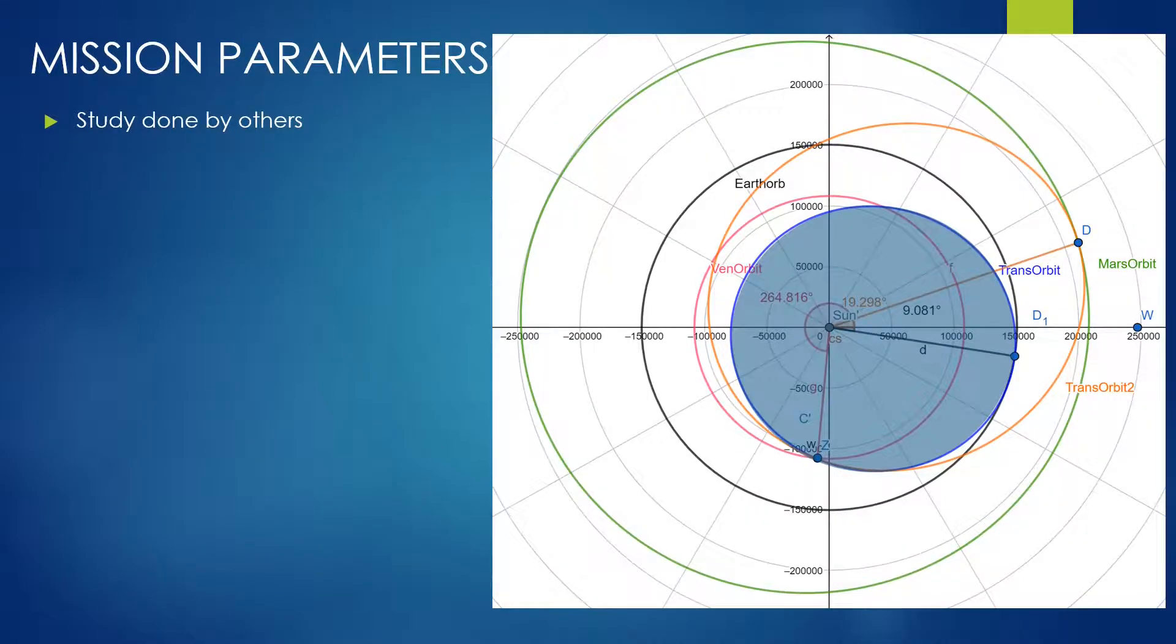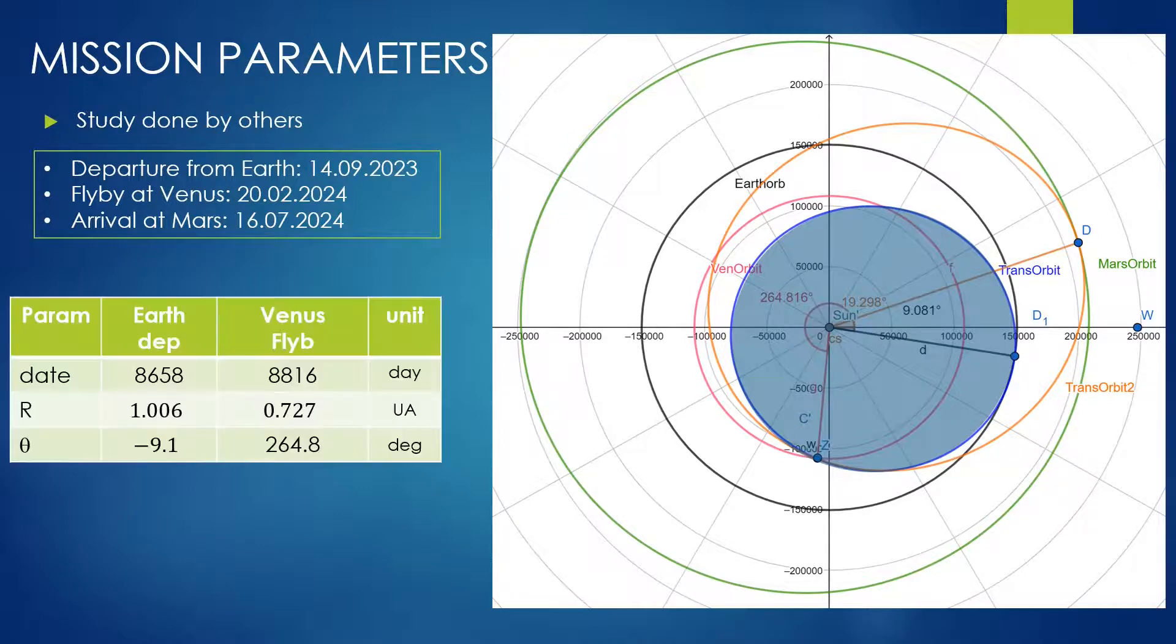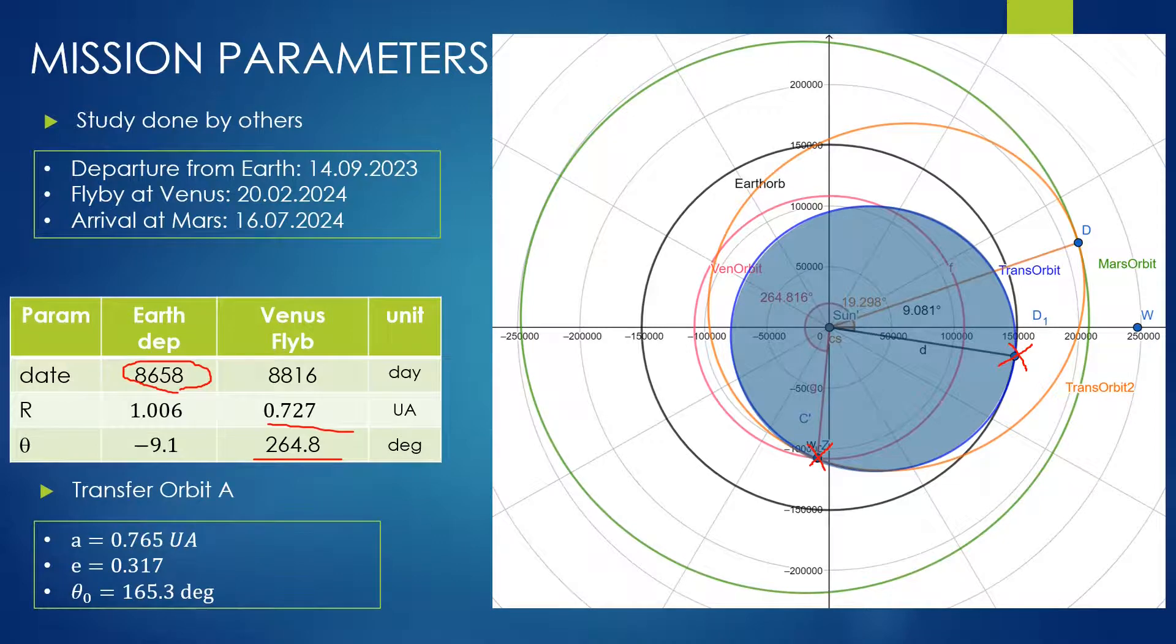The study of the orbit is not part of this presentation. Let's assume it's made by somebody else. From this study we know the departure and arrival times. The departure from Earth will be on 14th of September 2023, the flyby at Venus on 20th February 2024, and the arrival at Mars 16th of July 2024. Here we have also a table with some reference parameters corresponding to the dates above. The position of the Earth in terms of radius and theta, the starting position of Earth here, and the arrival position at Venus. Also we know the geometrical parameters of the transfer orbit A, the one represented in blue: the major semi-axis A, the eccentricity E, and the argument of the periapsis theta 0.